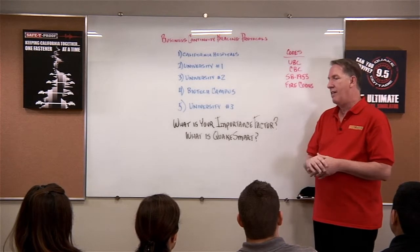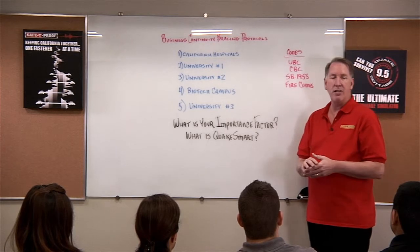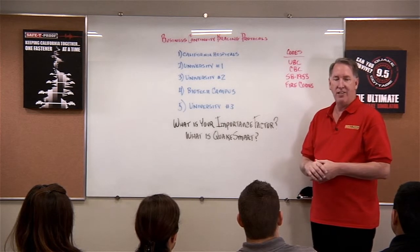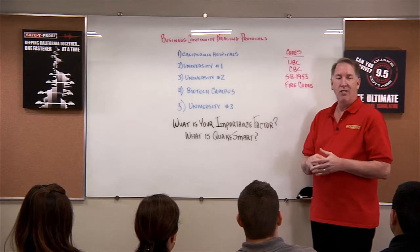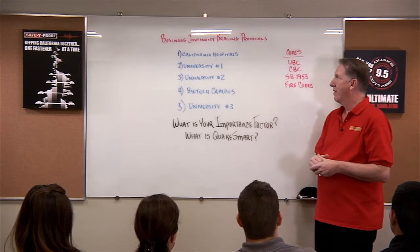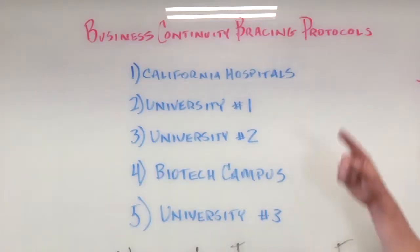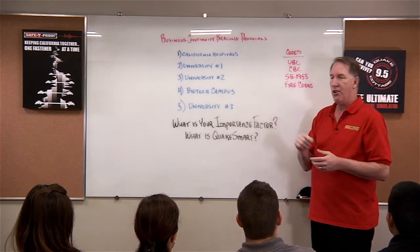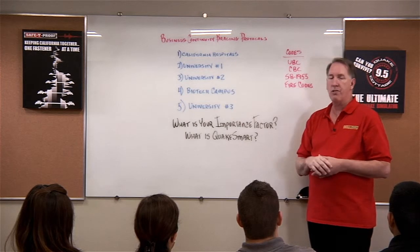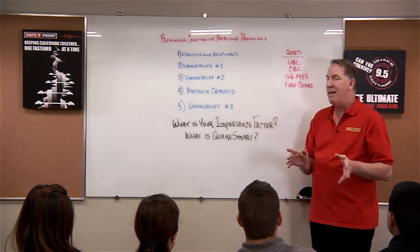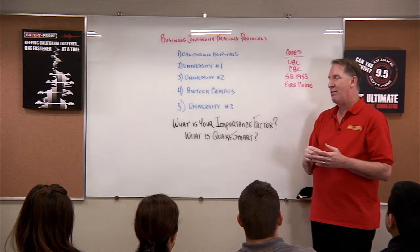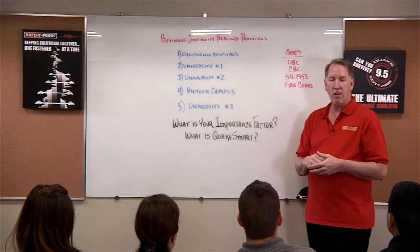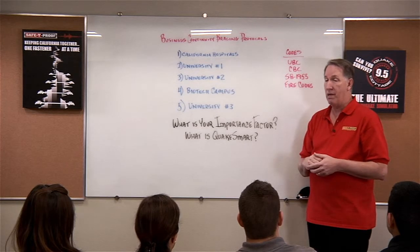I think the best way to determine what you're going to do is look at other entities and how they have done this. No need to reinvent the wheel. So the first thing we're going to look at is California hospitals. After the Northridge earthquake, almost 20 hospitals closed down — none of them fell down. These hospitals were closed because of damage from the earthquake to non-structural systems inside the hospital.